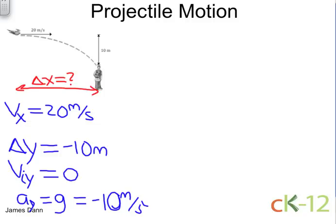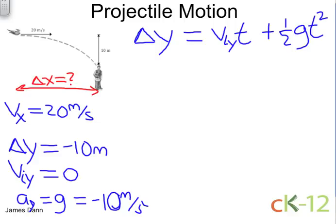So, let's set about solving this problem. The first thing we need to do is figure out how much time the poo is in the air. We'll use the equation for distance. The change in y equals the initial speed in the y direction multiplied by time plus one-half times the acceleration times the time squared.